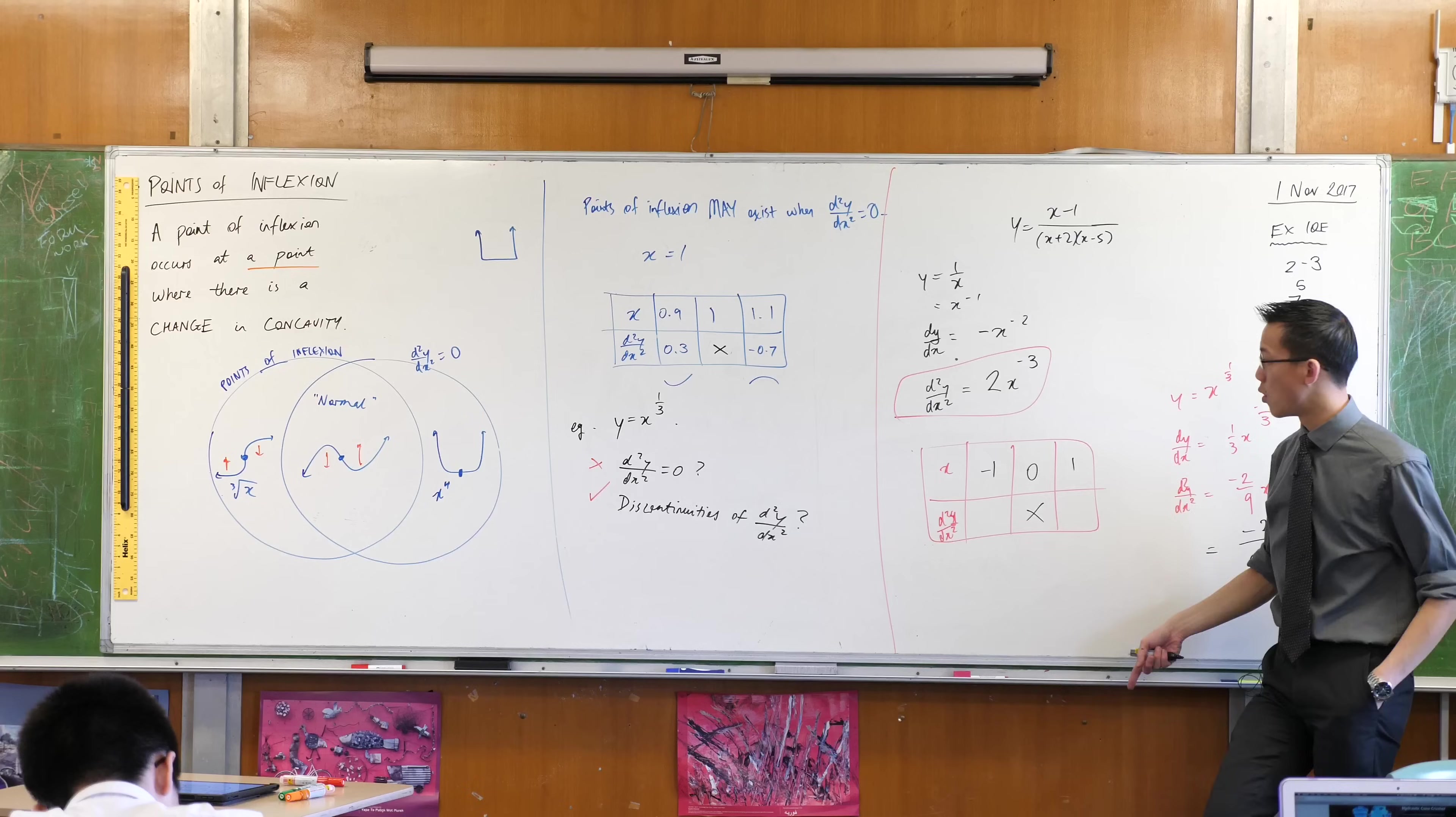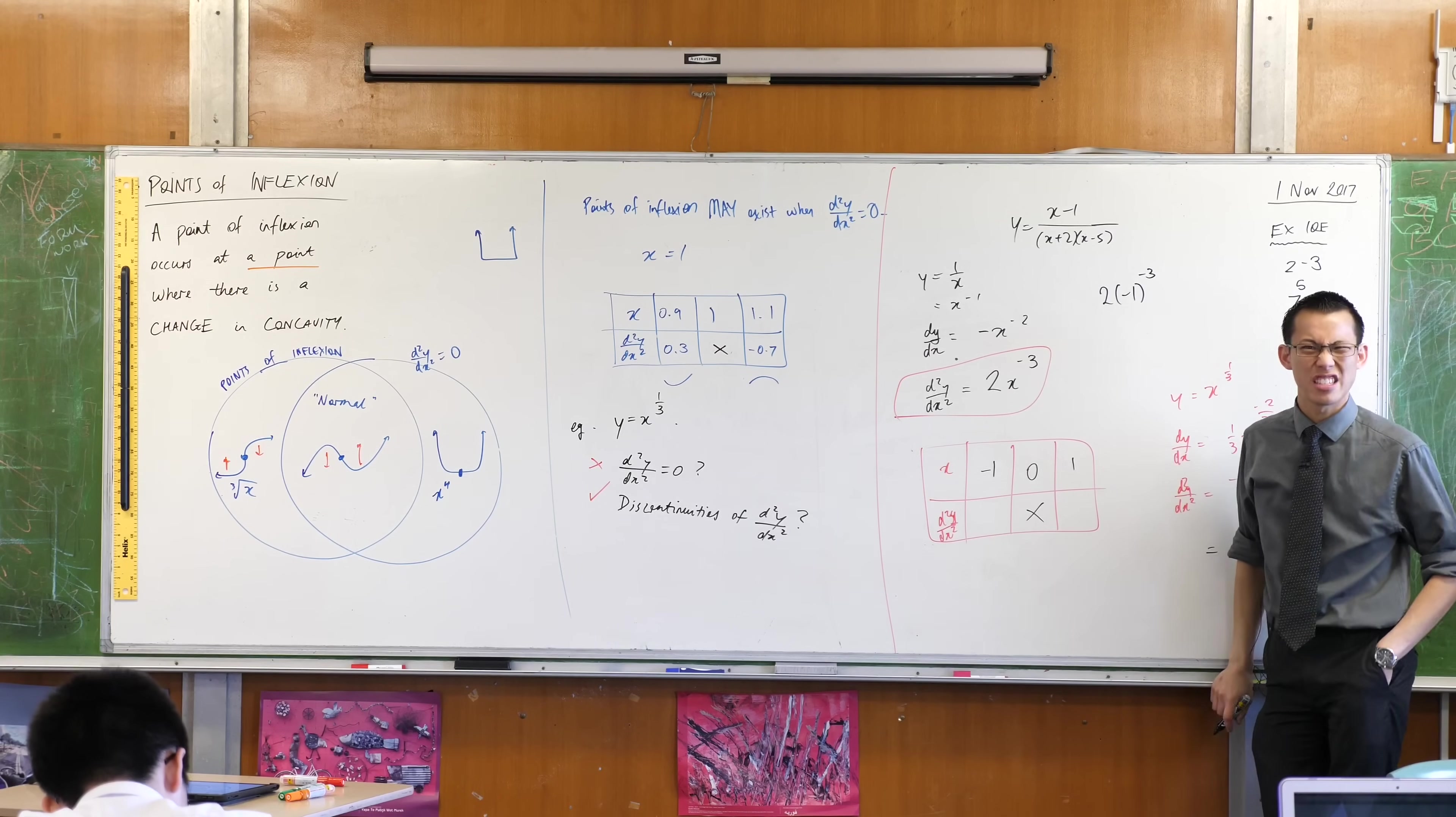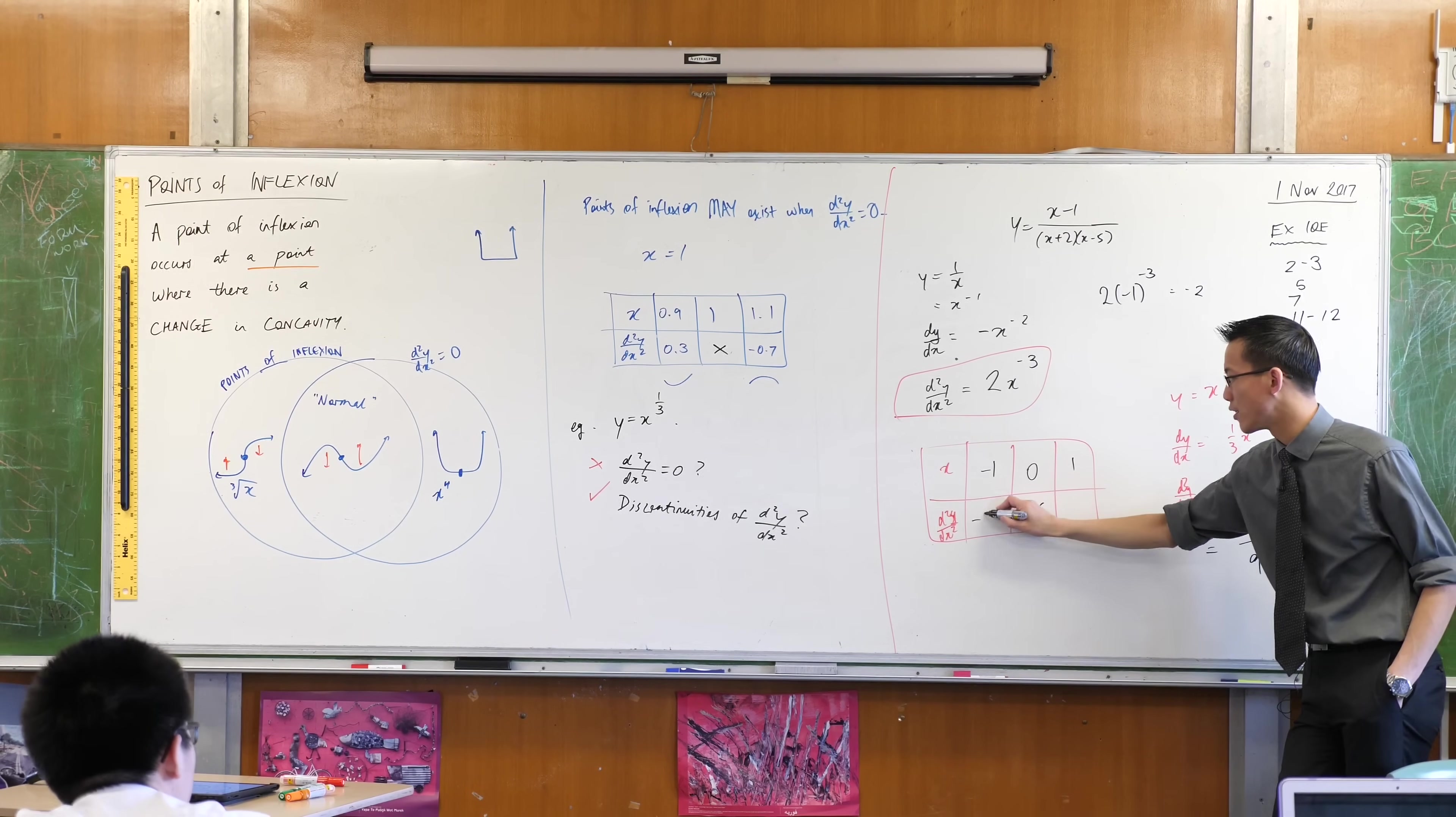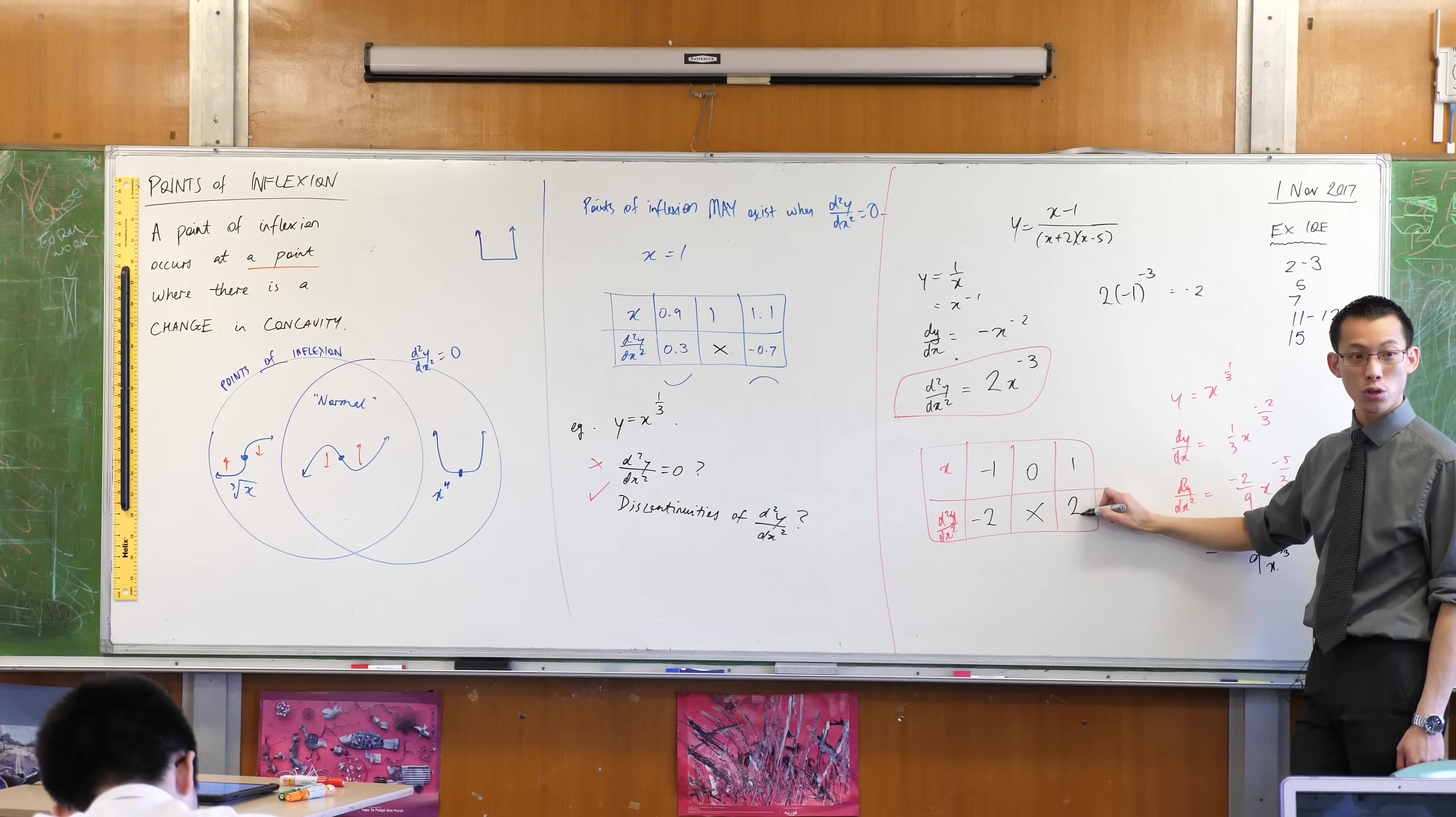When we put in negative 1, 2 times negative 1 to the power of negative 3. What is that? Because that, sorry, that is just negative 1, so I'll put in a value there. Like I said, you have to put an actual number. You can't just say minus. When you put in 1, what happens? This is easier. That's just 2.